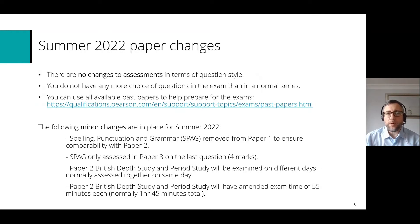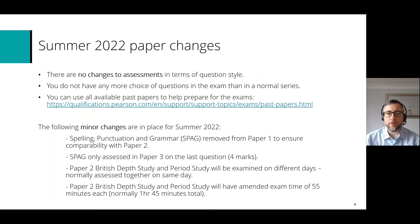There are just a couple of minor changes to be aware of. Spelling, punctuation and grammar — or SPAG — is normally assessed in paper 1, but that's been removed for this summer to make it comparable with paper 2 because of the optionality in place. SPAG will only be assessed in paper 3 on the last question, and it's worth 4 marks.